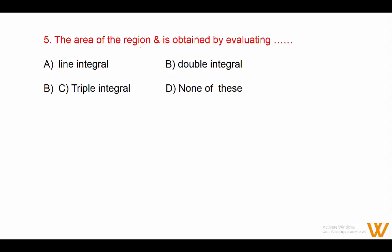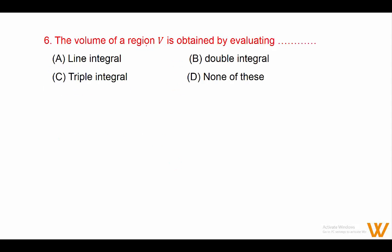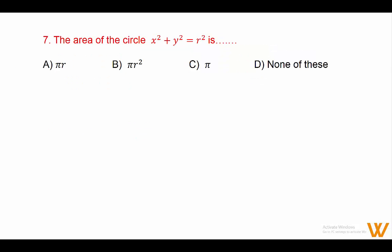Question 5 and 6: The area of a region is obtained by evaluating a double integral, and the volume of a region V is obtained by evaluating a triple integral. Answer for volume is option C: triple integral.